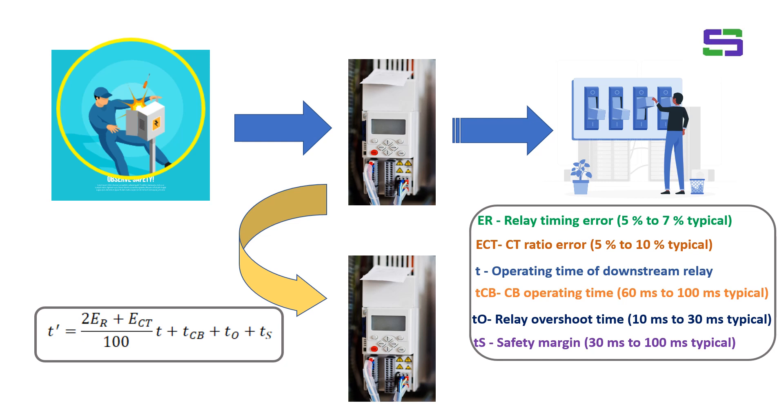So if we consider all these parameters, all these things here, typically that coordination time between the upstream and downstream relay is coming 160 millisecond to 250 millisecond. So this is how the two relays, upstream and downstream relays, are being coordinated.